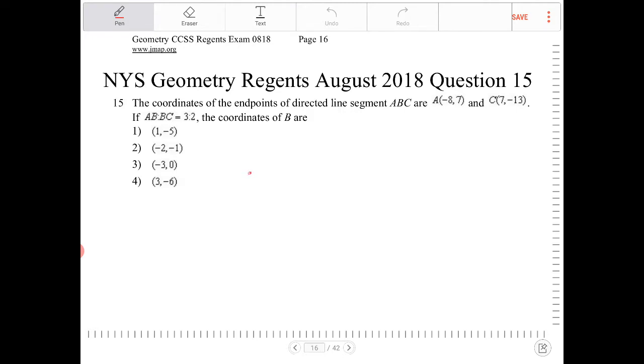I'm going to say A is over here where this is negative 8 comma 7. And I'm going to say C is over here.